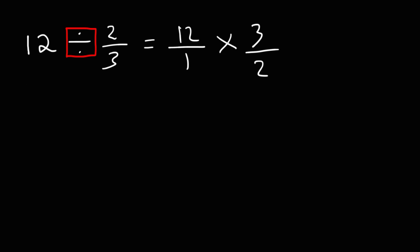So now at this point, we need to multiply across. So 12 times 3 is 36. And 2 times 1, or 1 times 2, is 2.